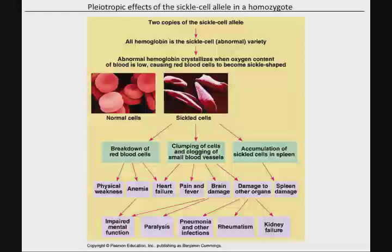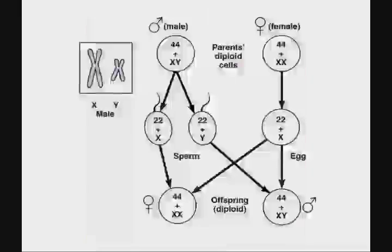So far we've looked at incomplete dominance, codominance, multiple alleles, polygenic inheritance, and pleiotropy. You'll need to review all of these and we will do problems with each. But there are two more to cover, and the next one is sex-linked genes.